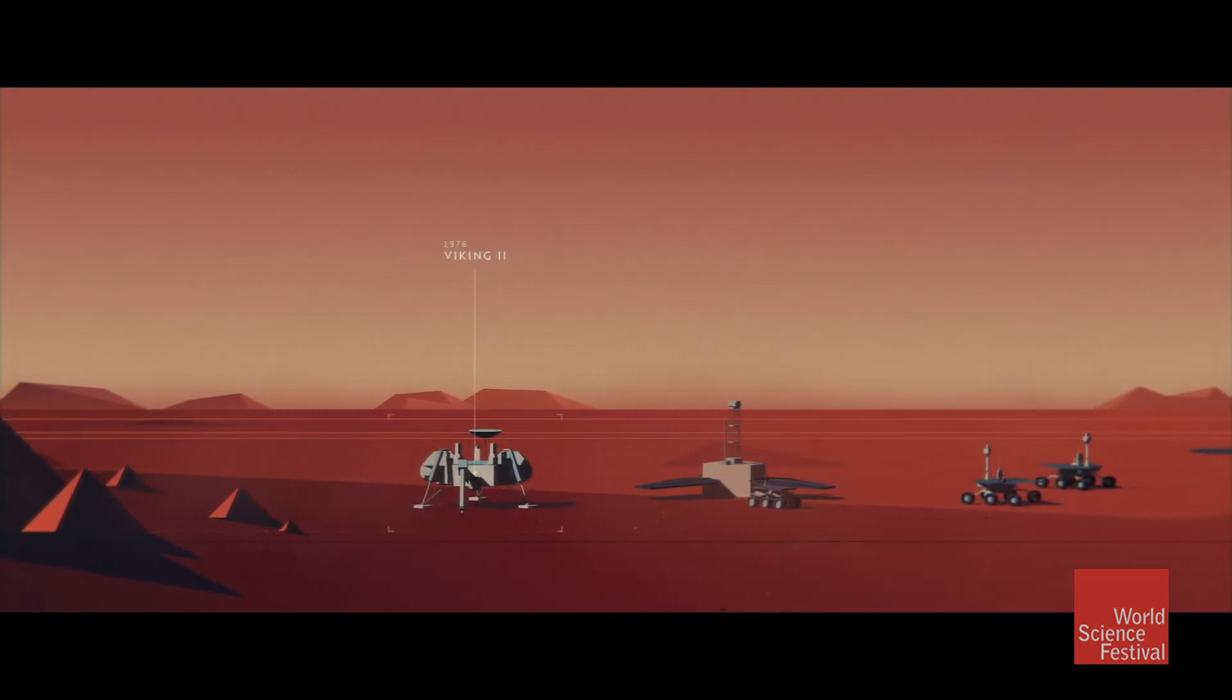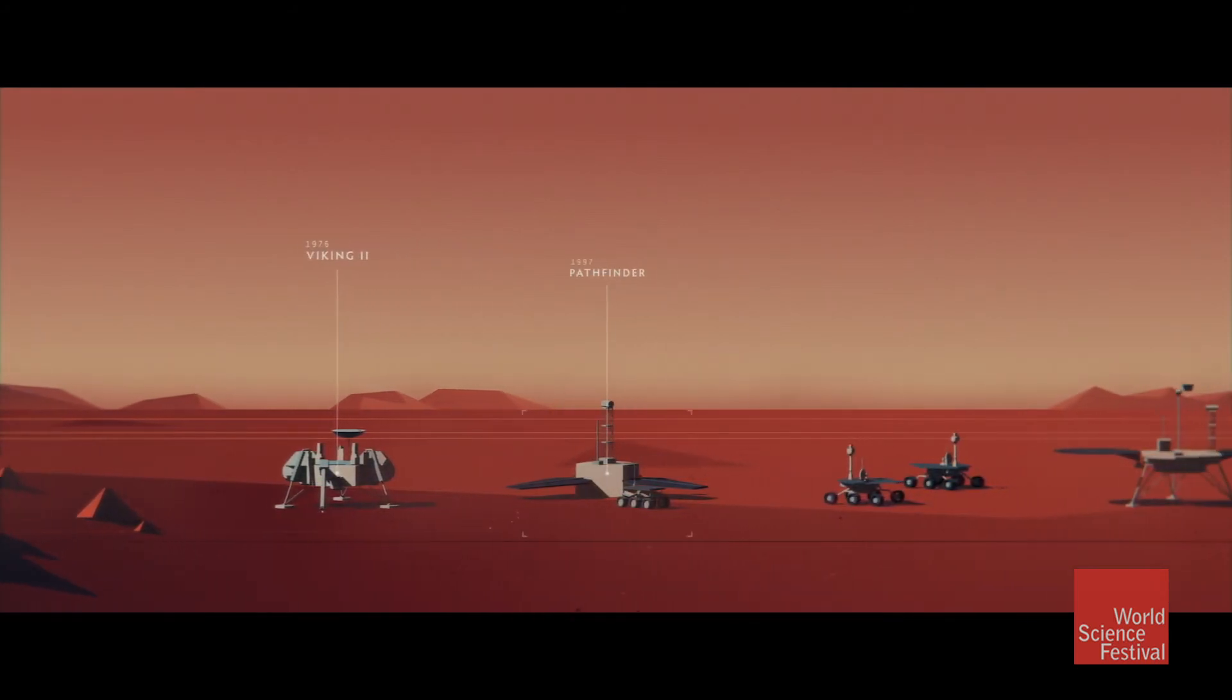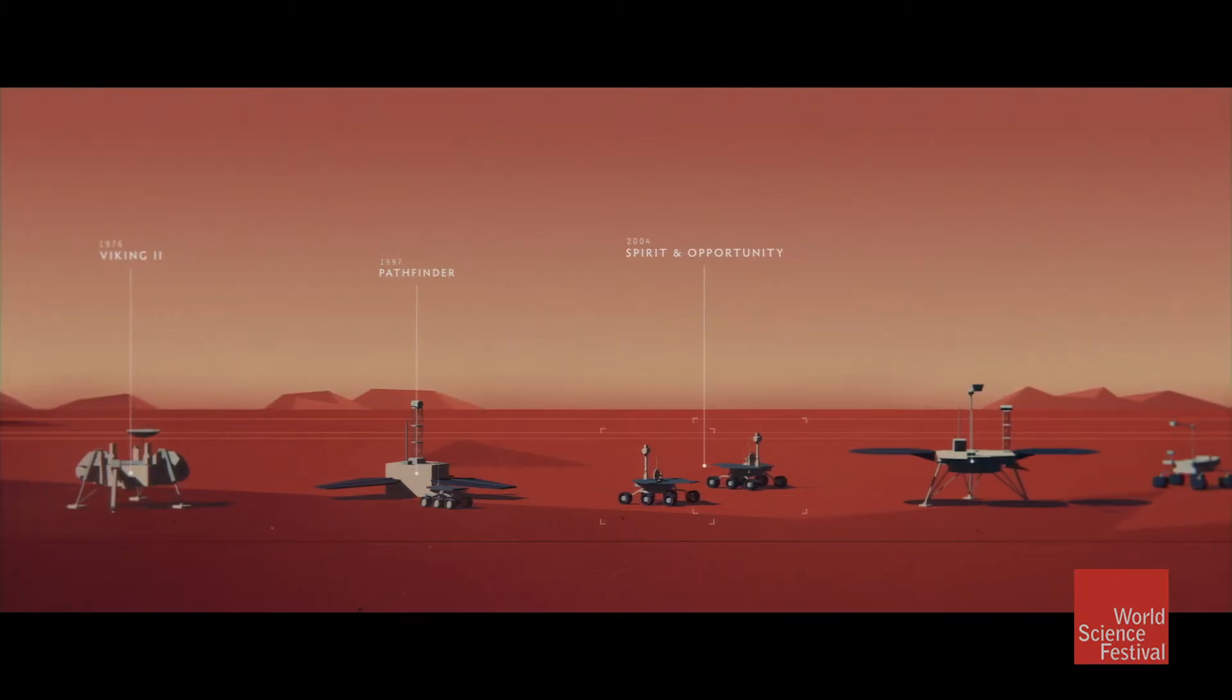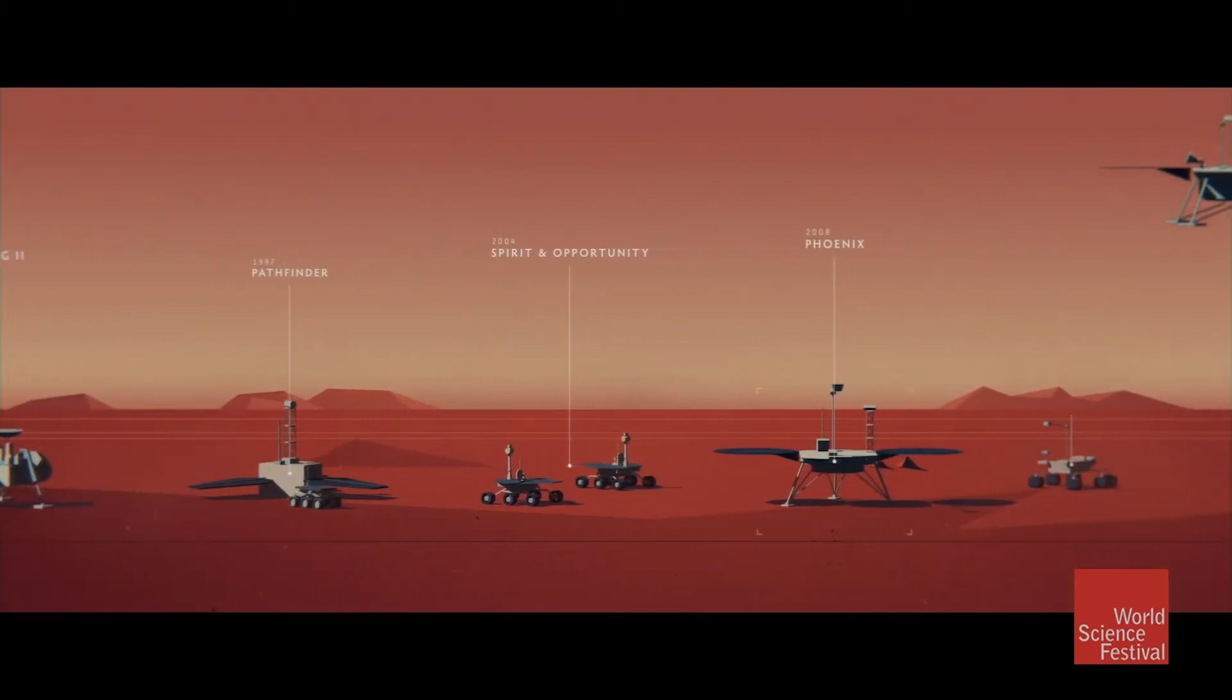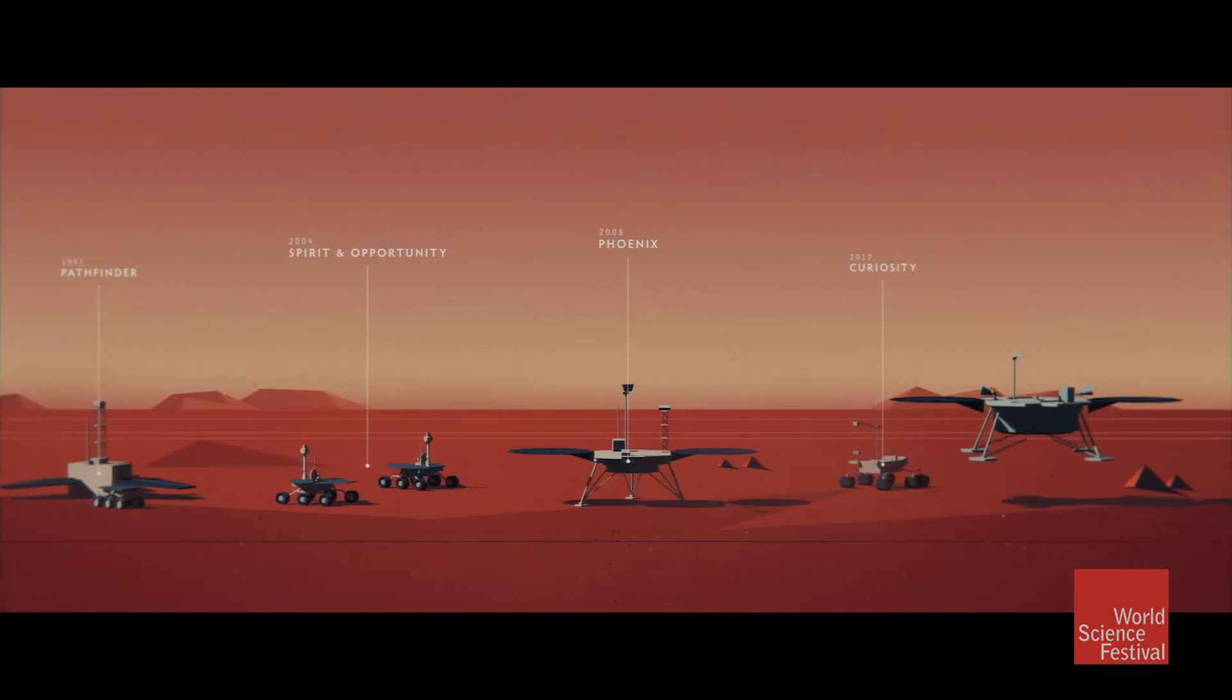We've since landed seven more objects on Mars to study topography and geography, and in the process, learned that those canals, which incited such a frenzy, turned out to be nothing more than an optical illusion.